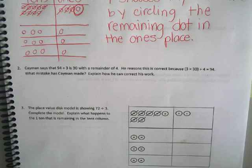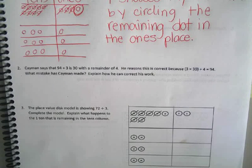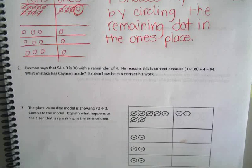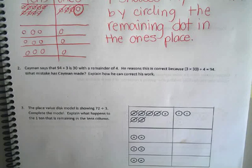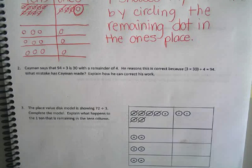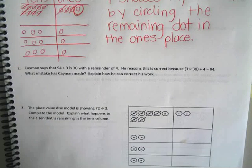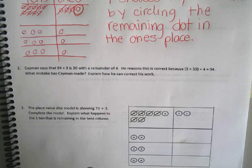Number two. Cayman says that 94 divided by 3 has a remainder of 4. He reasons that this is correct because 3 times 30 plus 4 equals 94. What mistake has Cayman made? Explain how he can correct his work.